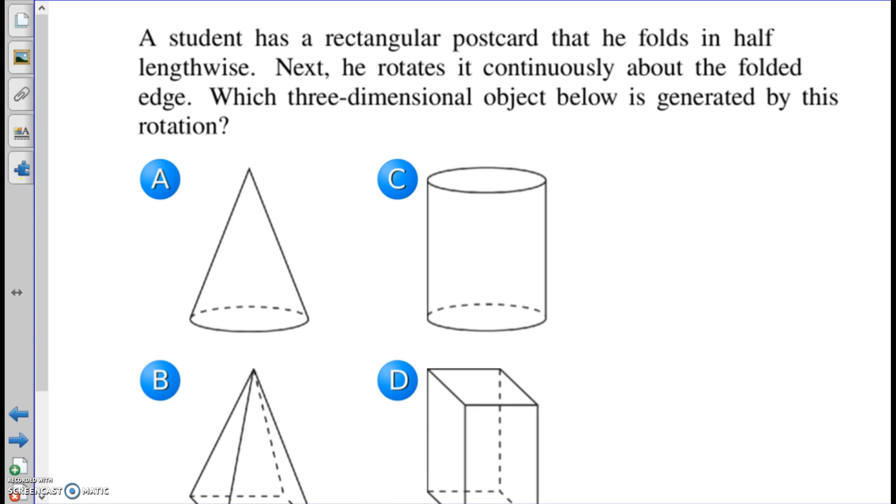Number one, a student has a rectangular postcard that he folds in half lengthwise. Next, he rotates it continuously about the folded edge. Which three-dimensional object below is generated by this rotation? So this is difficult for me to sketch because I'm on a two-dimensional surface. But if we have a rectangular postcard and fold it in half, it's still basically a rectangle. And if I take that, let's say I folded it on this edge, and if I continuously rotate, I'm not just reflecting it over there. Otherwise it would just be another rectangle. Some people think it's a rectangle, they see 3D, so they want to jump at rectangular prism. But when you rotate something along an axis and spin it around, the term around there has the word round. It creates a circular motion when you spin something around an axis. That's why you're going to create a cylinder here. It's the cross section of a rectangle spun around.